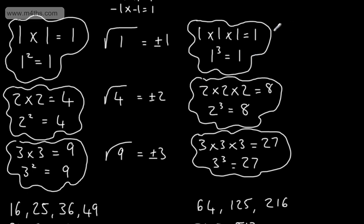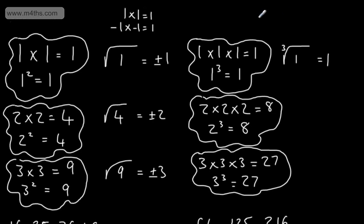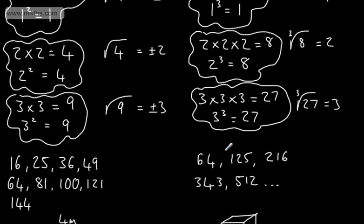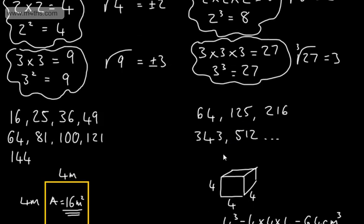If we look at our cube numbers, we can say that the inverse, or the opposite, is going to be cube rooting. And this is the notation we use. The cube root of 1 is going to be 1. We don't have a plus or minus answer, because minus 1 times by minus 1 times by minus 1 gives us positive 1, then multiplied by minus 1 gives us minus 1. So the cube root of minus 1 is going to give us minus 1. The cube root of 8 is going to give us 2. 2 cubed is 8. The cube root of 27 is going to give me 3. The cube root of 64 is 4. The cube root of 125 is 5.